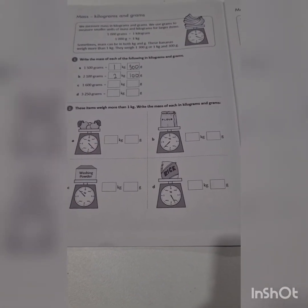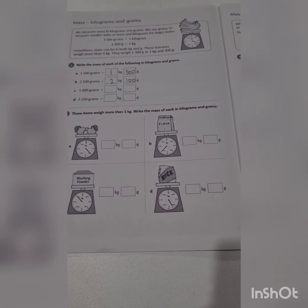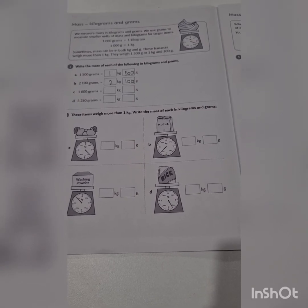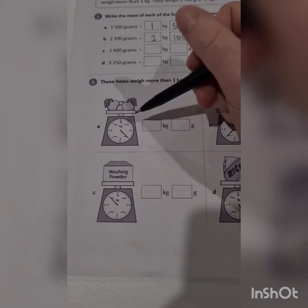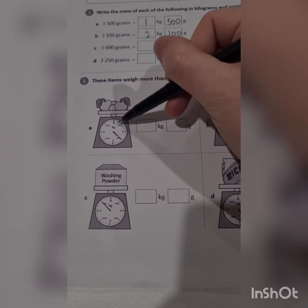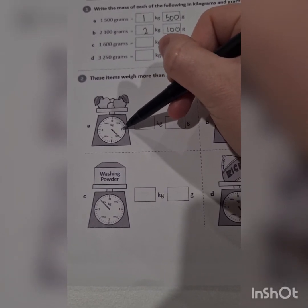Question 2: these items weigh more than 1 kilo. Write the mass of each in kilos and grams. Just try your best. It's a little bit tricky to read because the photocopying didn't work out that great, but we'll just try our best.